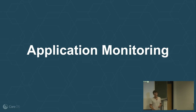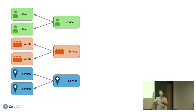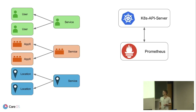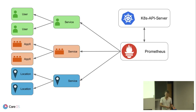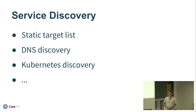Next up is application monitoring. You have a bunch of applications, probably replicated and grouped into services. Prometheus doesn't know where your applications live, so it uses service discovery integrations — for example, with Kubernetes. It asks the Kubernetes API server where all the applications live and then scrapes them. You've got your application monitoring set up. Prometheus is very versatile — you can set targets statically, use DNS, or any other service discovery integration.